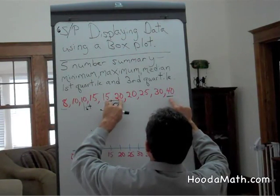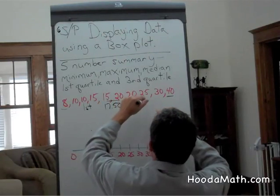We find the middle number, move our fingers, and the middle number. The third quartile is $25.00.